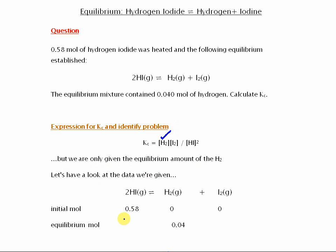So the data we're given is that initially there's 0.58 mole of the hydrogen iodide. We'll assume none of the hydrogen and the iodine. And at equilibrium, 0.04 mole of the hydrogen.